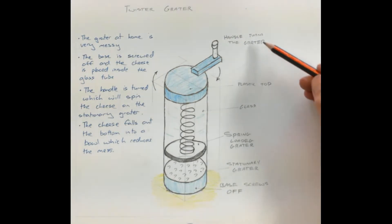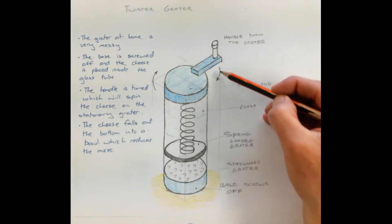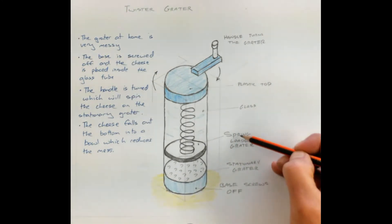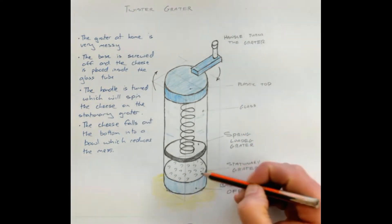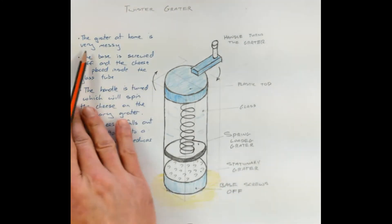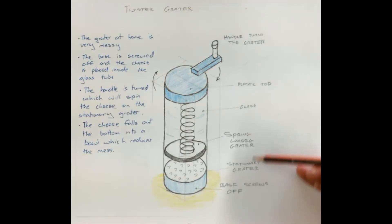Along with that though I've labeled the main parts. So I've got the handle that turns grater. I've shown that it'll rotate. I've got a plastic top. This is a glass tube. I've got a spring-loaded grater. I've got a stationary grater and I've got a base that screws off. In other words anything that I referred to in my notes on how it worked I've highlighted over here and showed how it works.